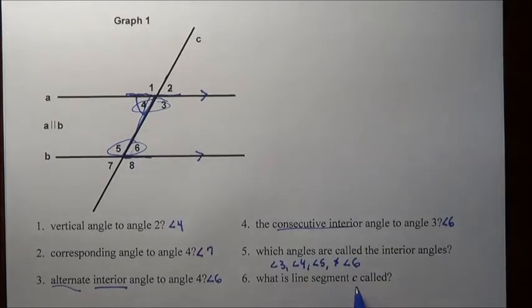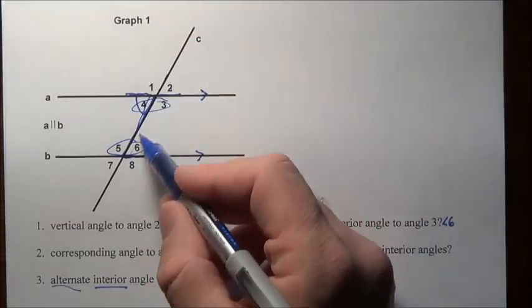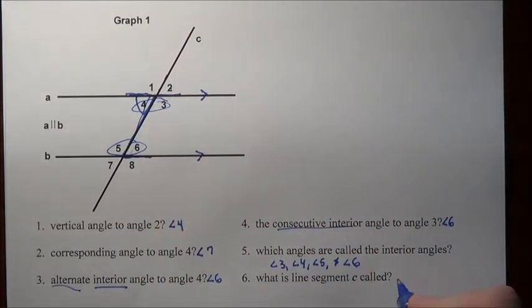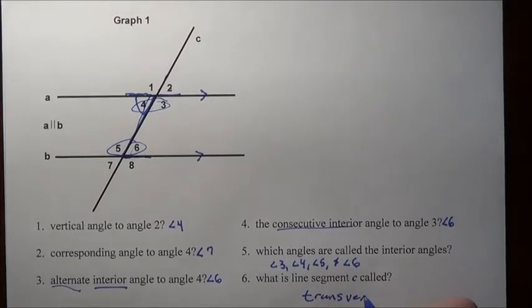What is line segment C called? Here's C. Remember, A and B are parallel. What did I call that? That's called the transversal line. So the transversal line. That's what that is. In this case, it's a transversal line segment because notice there's not arrows on the end.